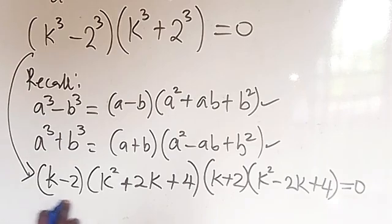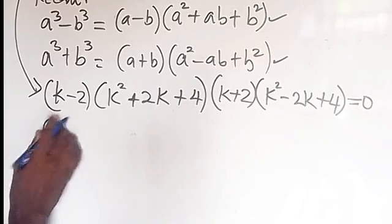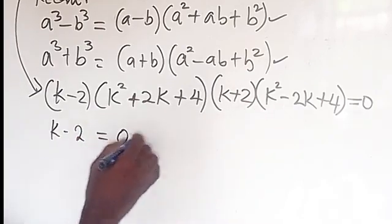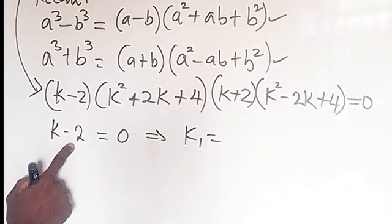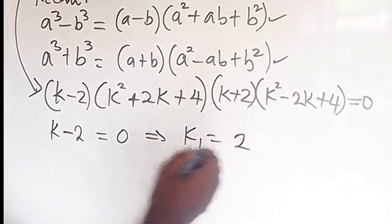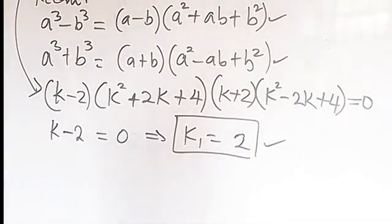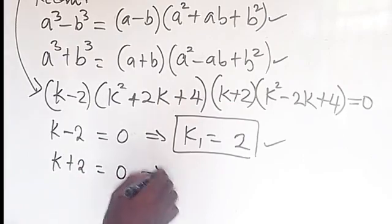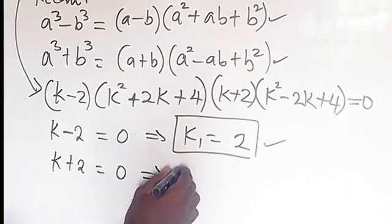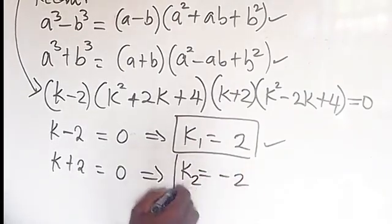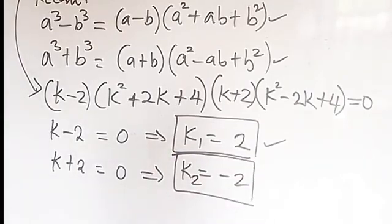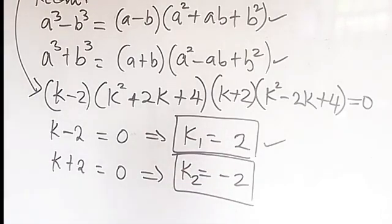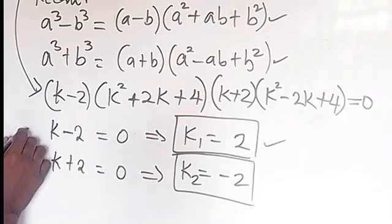This is a zero-form equation, so we consider four cases. Case 1: k minus 2 equals zero, which gives k₁ equals 2. Case 2: k plus 2 equals zero, which gives k₂ equals minus 2. These two cases give us the real solutions.